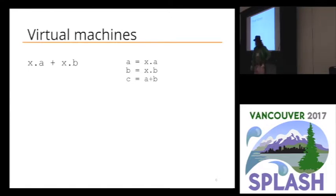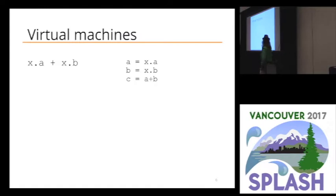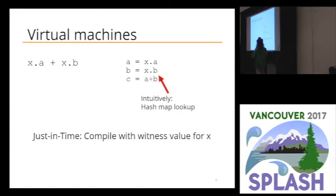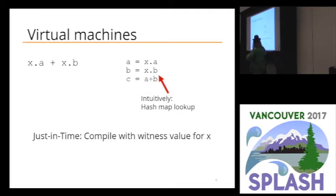The other side of this is virtual machines. Here's a very simple snippet of a JavaScript program — it adds x.a and x.b. Internally that might be some SSA form: an instruction that gets 'a' out of x, an instruction that gets 'b' out of x, and then an instruction that adds them together. Intuitively you might think you're just doing a hash table lookup on an object, but virtual machines are cleverer than that because they use just-in-time compilation. They're not compiling knowing only this — they're compiling knowing the code and some witness: an actual value that has reached x, often many values.